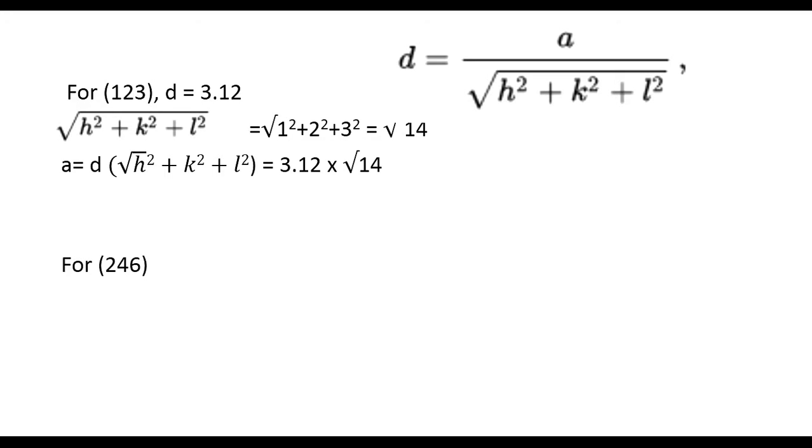For (2,4,6), the value of the square root of h squared plus k squared plus l squared is 2 squared plus 4 squared plus 6 squared, which equals root 56. For finding the value of d, it is a divided by root of h squared plus k squared plus l squared, which is 3.12 times root 14 divided by root 56.